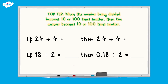Here are the answers. If 24 divided by 4 equals 6, then 2.4 divided by 4 equals 0.6. If 18 divided by 2 equals 9, then 0.18 divided by 2 equals 0.09.